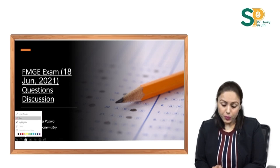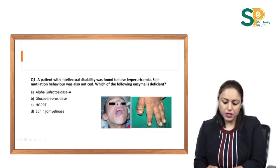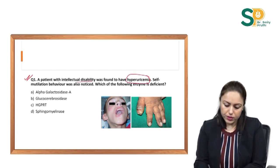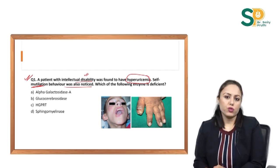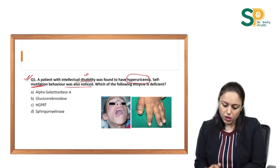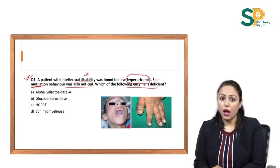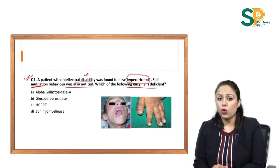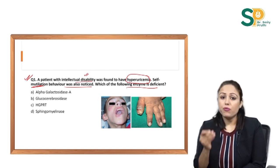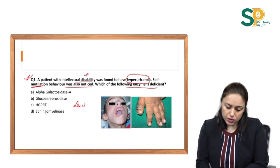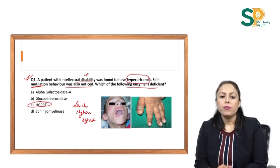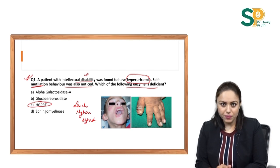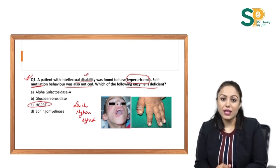Question number 1: a patient with intellectual disability was found to have hyperuricemia, mental retardation, and self-mutilation behaviour. This was an image-based question asking which enzyme is deficient. It is a very commonly asked question — self-mutilation is given, so this is Lesch-Nyhan syndrome. The answer is HGPRT enzyme deficiency, that is hypoxanthine-guanine-phosphoribosyl transferase. Do read the topic of purine catabolism.